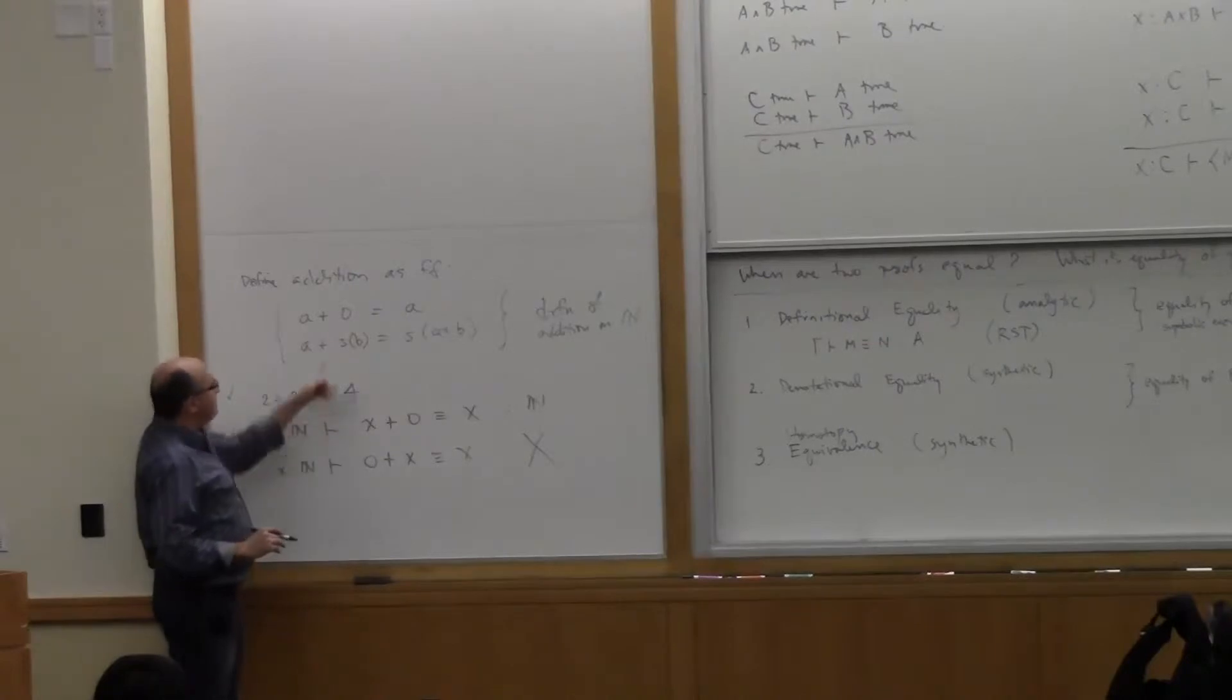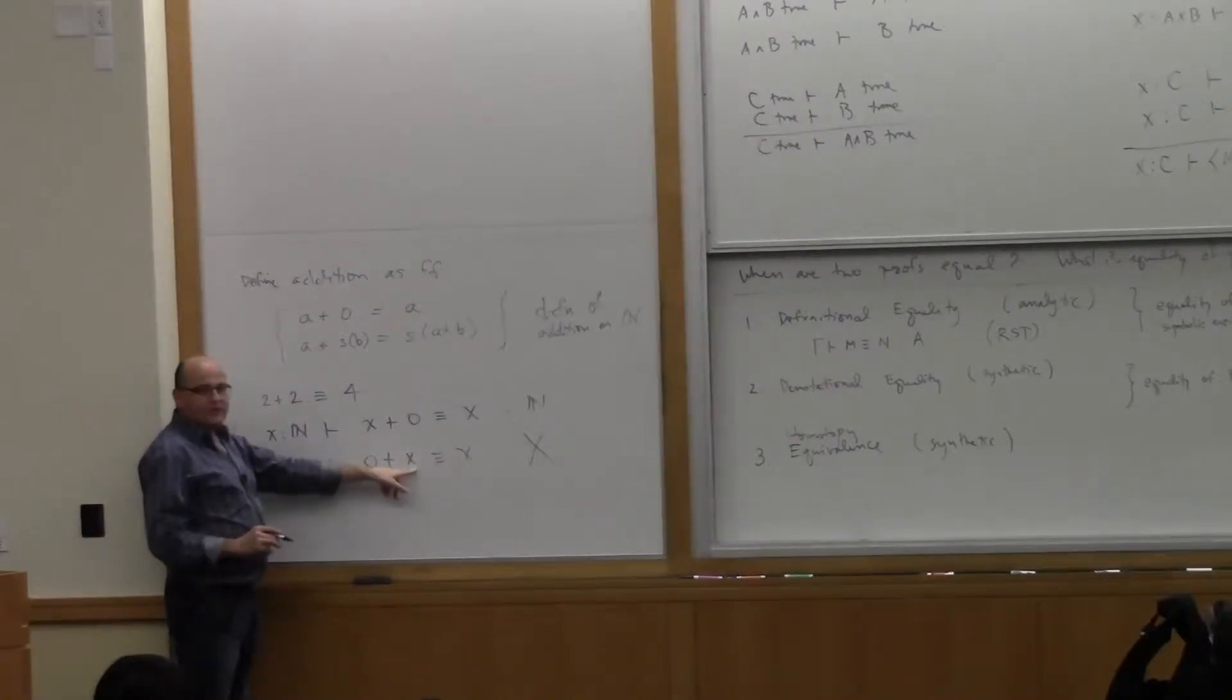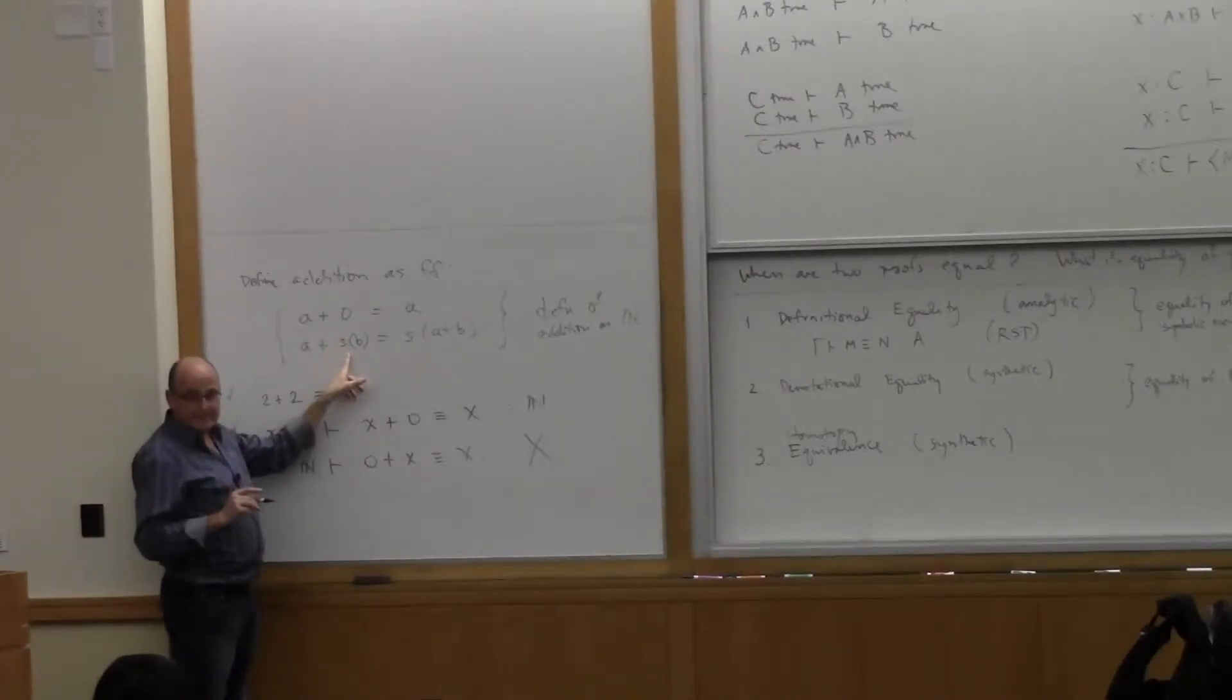The reason is, this is inductive on the right, and there's nothing you can do. This is just a variable. No definitional rule applies because x is a variable. It's not 0. It's not a successor.